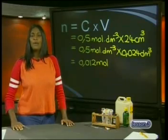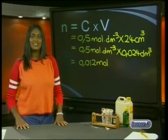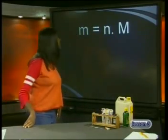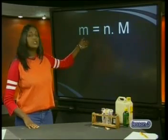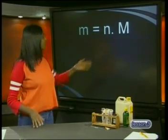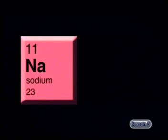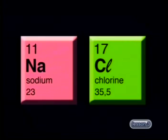We may want to convert from moles to mass. Do you remember the formula to use? Mass is equal to number of moles multiplied by molar mass. The molar mass is found by using the relative atomic masses from the periodic table. In this case, the relative atomic mass for sodium is 23, and for chlorine is 35.5, which gives us a total of 58.5 g/mol.